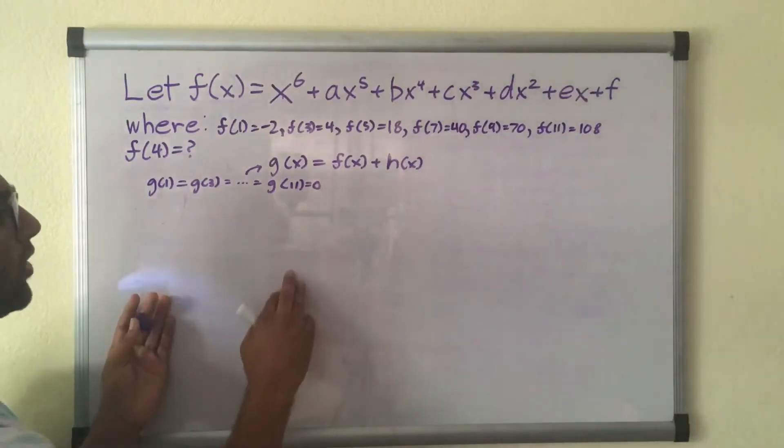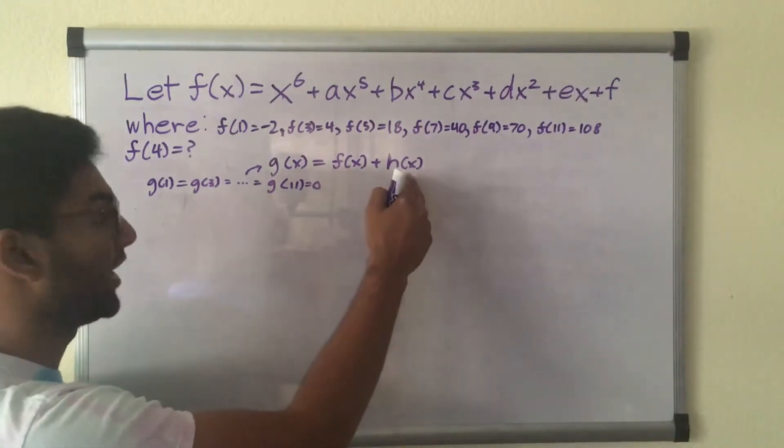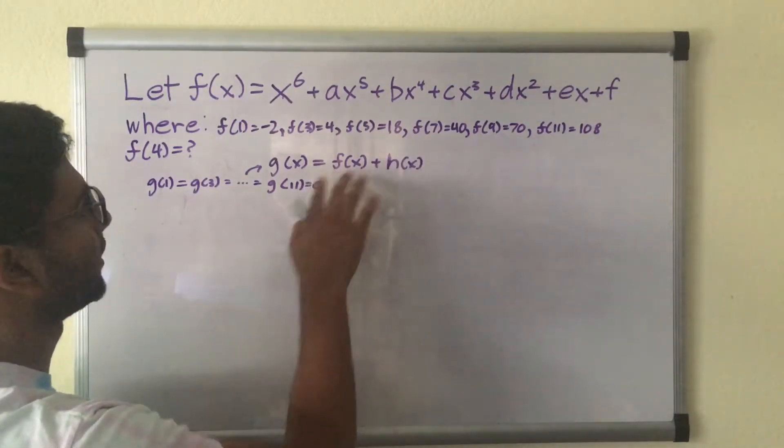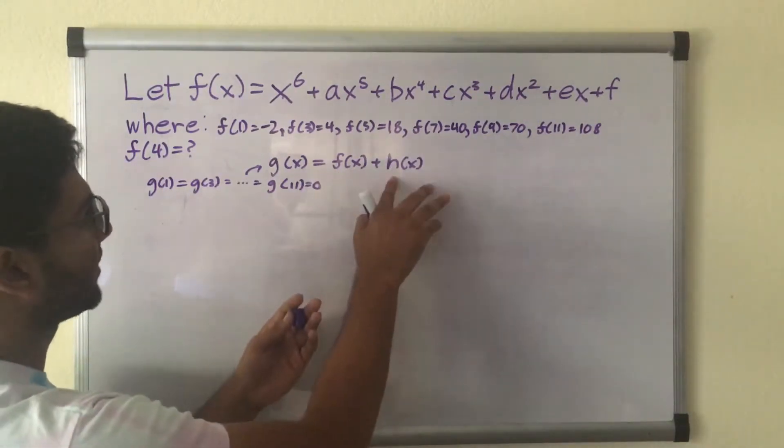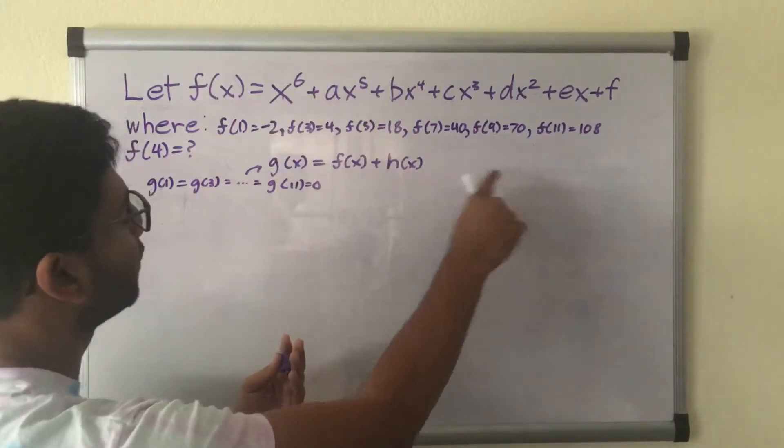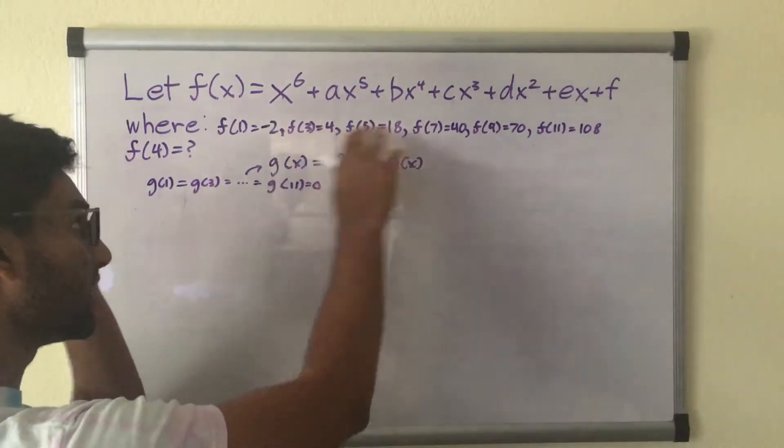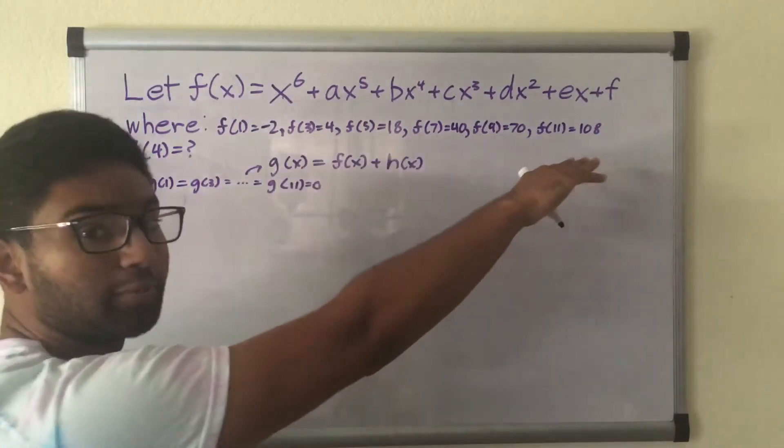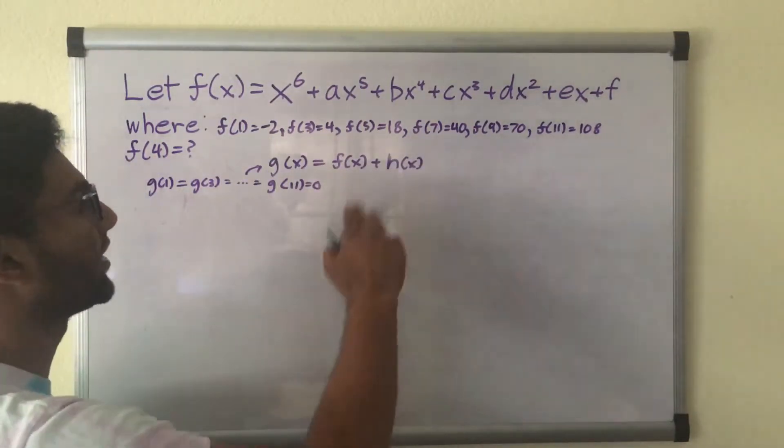Now how do we get that? Well, that all depends on this h of x function, right? Because we're adding h of x to this f of x. So what we need for this h of x is that for each of these inputs 1 through 11, we need for those initial values only for h of x to spit out an output equivalent to these outputs for f. And then we can subtract that.